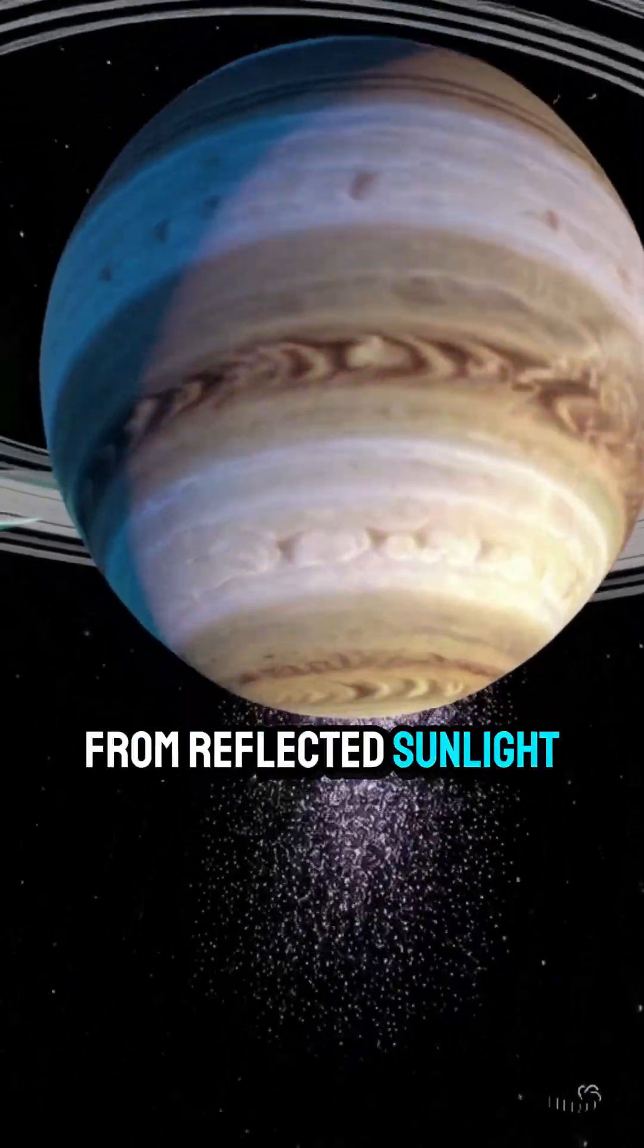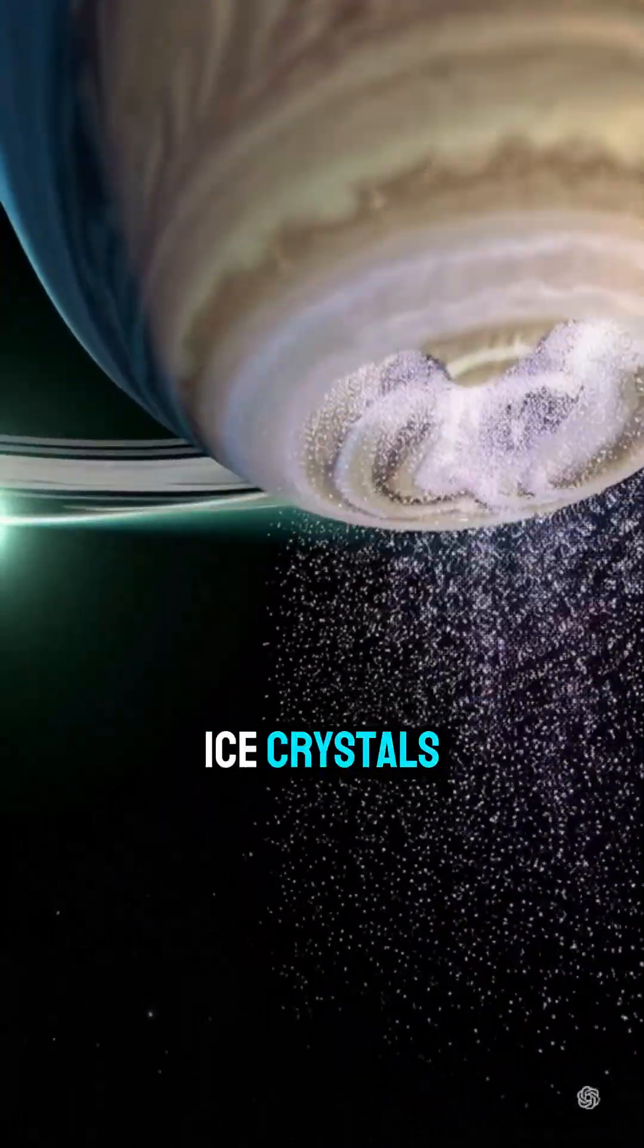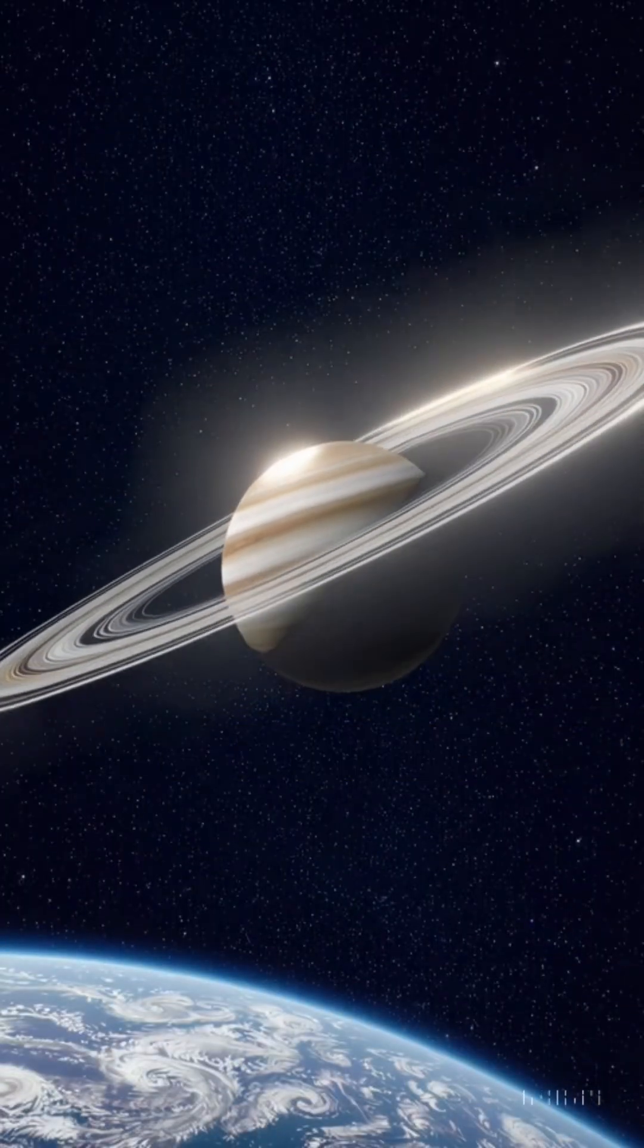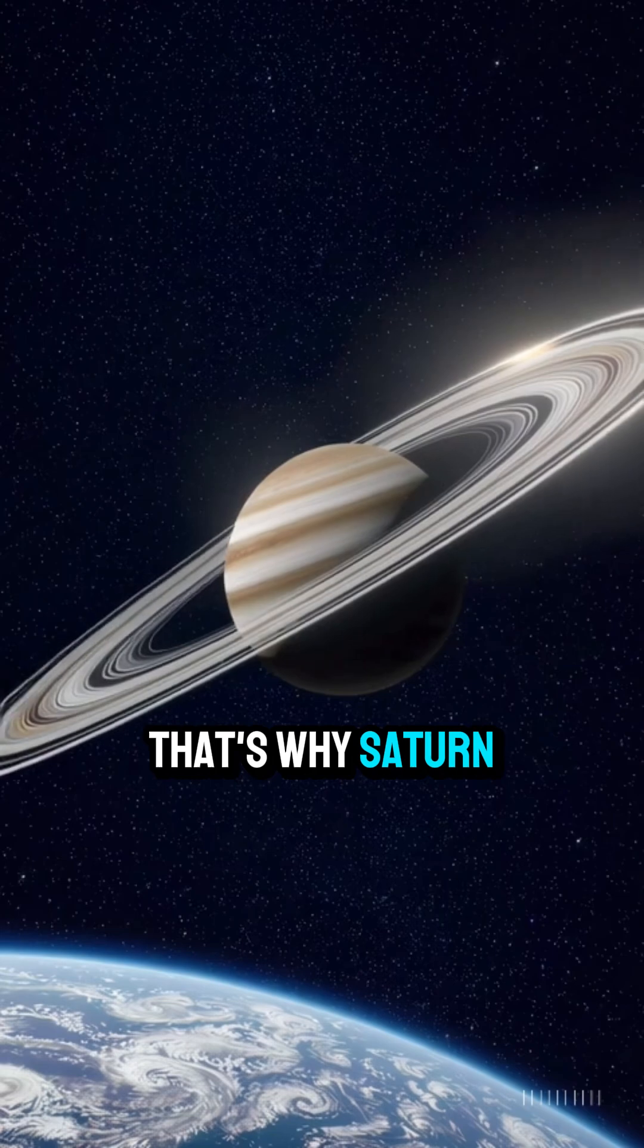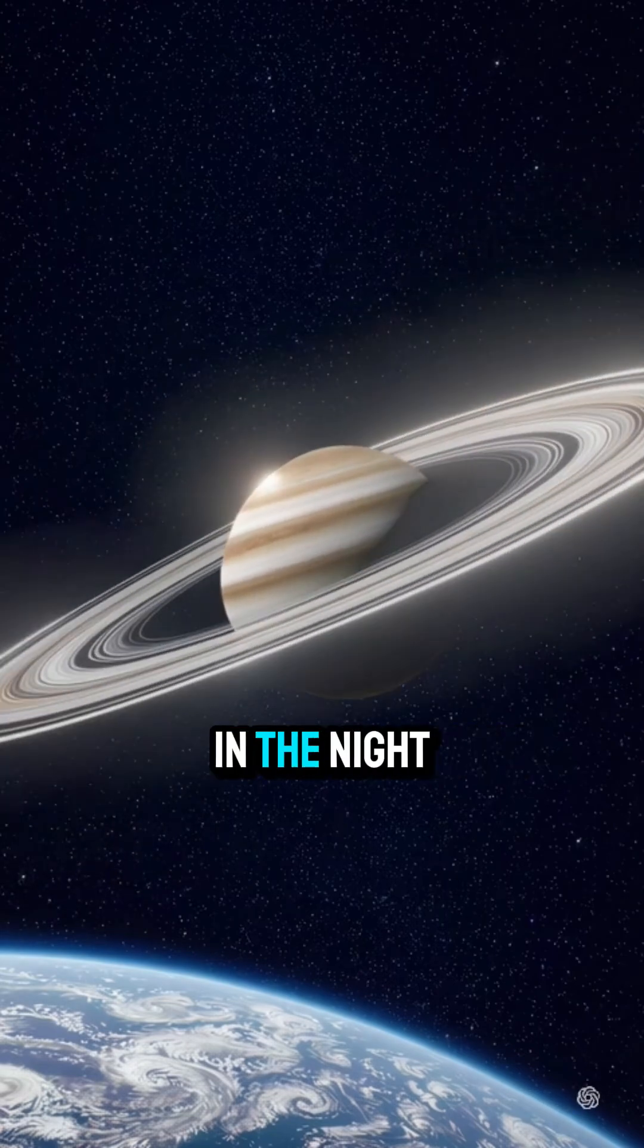The glow comes from reflected sunlight bouncing off pure ice crystals. Imagine a trillion diamonds orbiting in harmony, all catching the same light. That's why Saturn shines brighter than any other planet in the night sky.